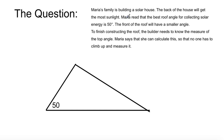Maria's family is building a solar house. The back of the house will get the most sunlight, and Maria read that the best roof angle for collecting solar energy is 50 degrees. The front of the roof will have a smaller angle, right here. To finish constructing the roof, the builder needs to know the measure of the top angle. Maria says that she can calculate this so no one has to climb up and measure it. What a thoughtful girl Maria is. Anyway, let's take a look, let's follow her adventure, shall we?